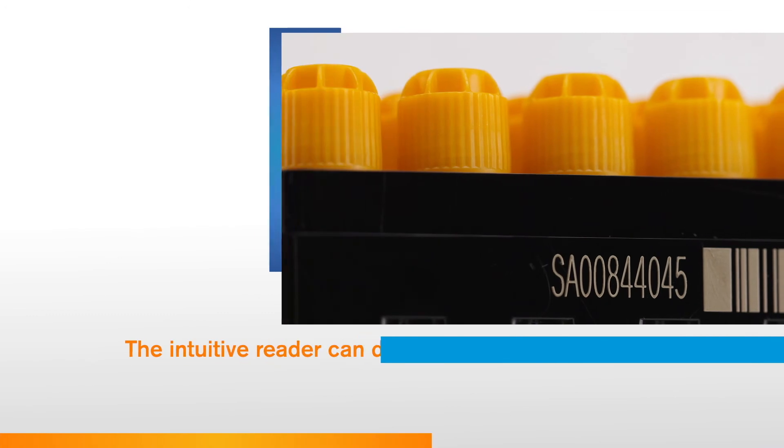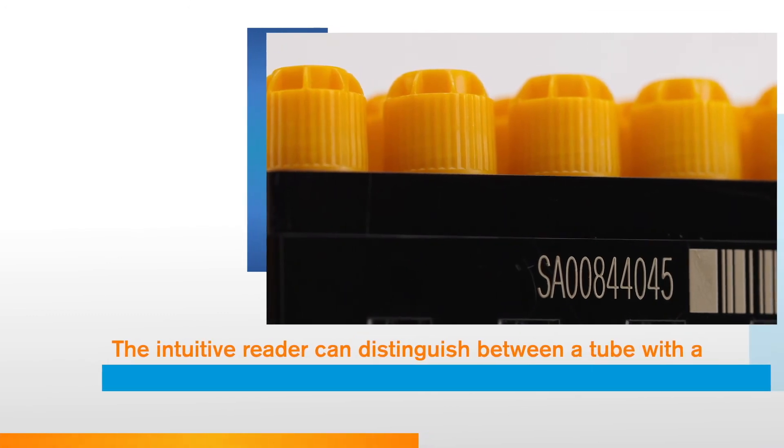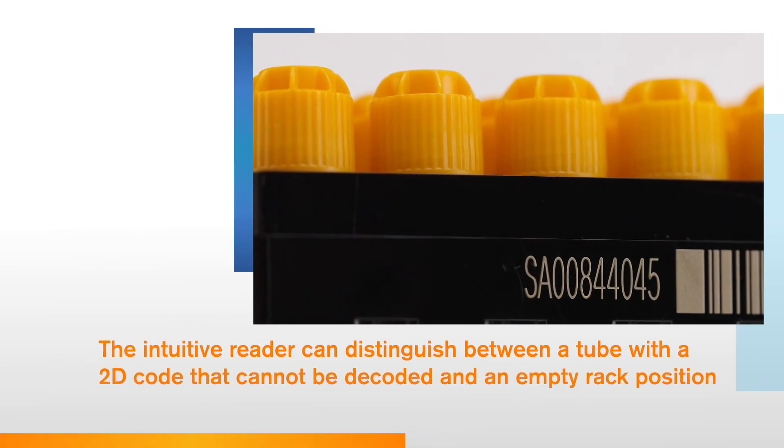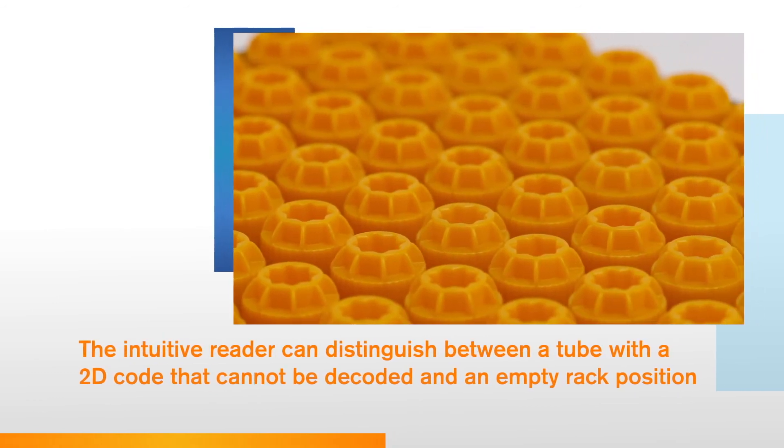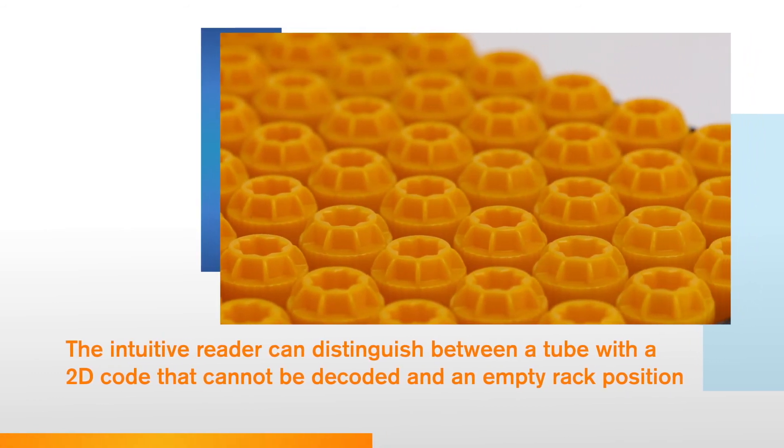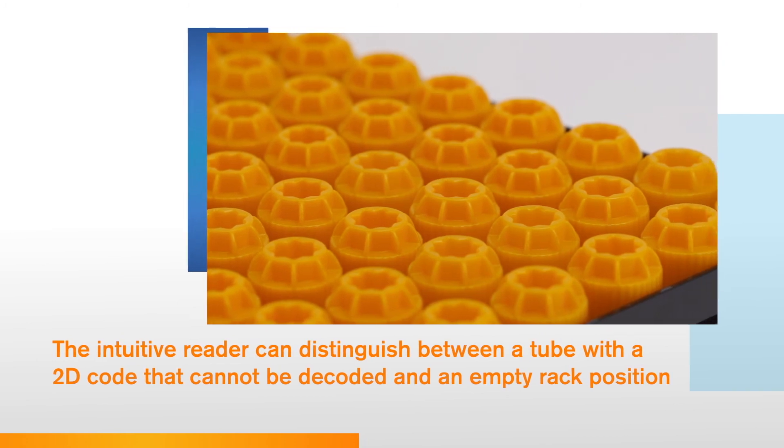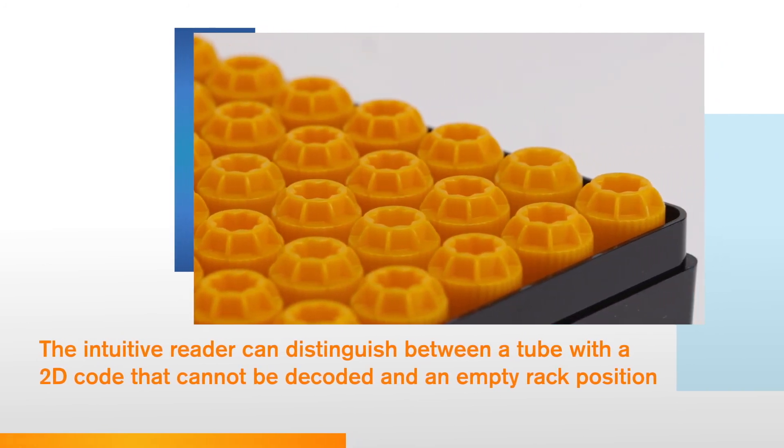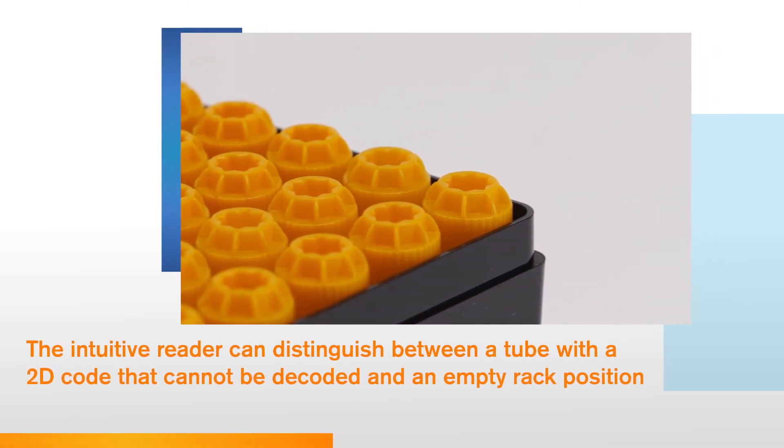The intuitive reader can distinguish between a tube with a 2D code that cannot be decoded and an empty rack position. It won't attempt to decode empty tube positions, so your data files are kept clean and time wasted identifying and erasing invalid data entry is eliminated.